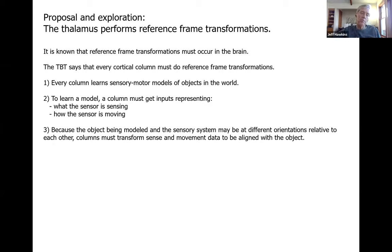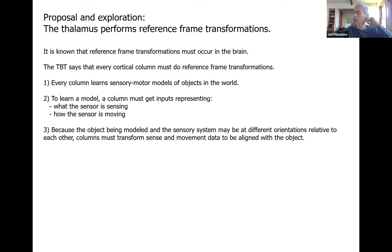The thousand brain theory says every column learns sensory-motor models of objects in the world — physical objects like a coffee cup, or any kind of structure that exists in the world. To learn a sensory-motor model, the column must get two types of inputs: what a sensor is actually sensing, and how the sensor is moving. Only by combining the movement and what it's sensing can you build up a model of the structural world. Because the object being modeled may be at different orientations relative to the sensor, the columns must transform sensory and movement data to be aligned with the object.